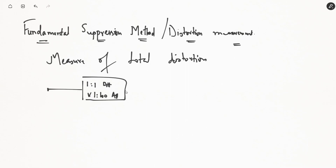For the block diagram of this circuitry, we have an attenuator — either 1:1 or 1:100 — followed by an impedance converter. The impedance converter offers a high impedance value so as to reject noise signals, acting as a noise filter.